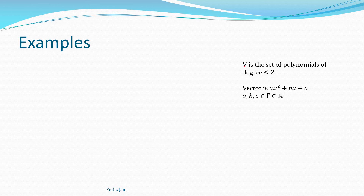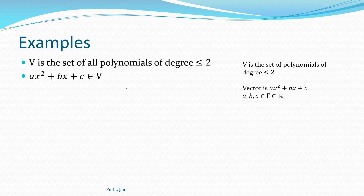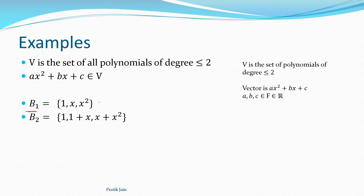The cardinality can be denoted with two straight lines. Let's consider a different example: V is a set of polynomials of degree less than or equal to 2. A vector looks like a0 + a1·x + a2·x², with coefficients belonging to the real field. One basis B1 can contain {1, x, x²}. You can also have another basis such as {1, 1+x, x+x²} — there are infinite options for basis. The dimension of this vector space is three.